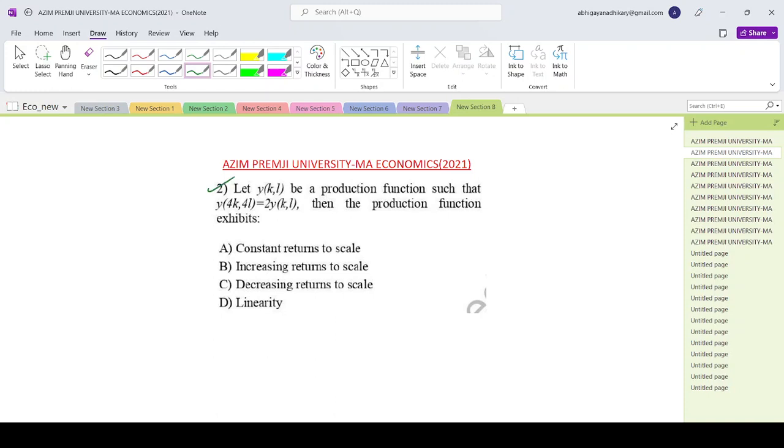Now moving on to the second question of the Azeem Premji University M.Economics paper. Let y(k,l) be a production function such that y(4k, 4l) equals 2 times y(k,l).